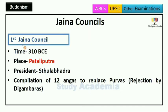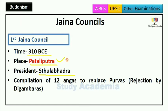First Jaina Council was held in 310 BC at Pataliputra. The president was Sthulavadra. At this council, the compilation of 12 Angas was done to replace the Purvas — yahan 12 Angas ko compile kiya gaya tha.